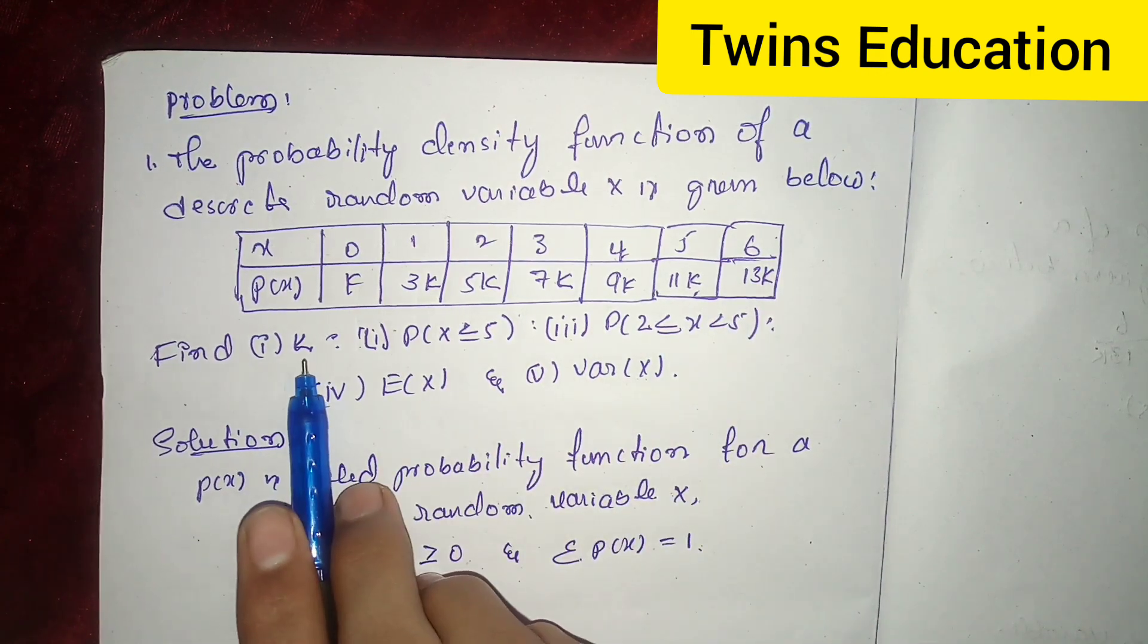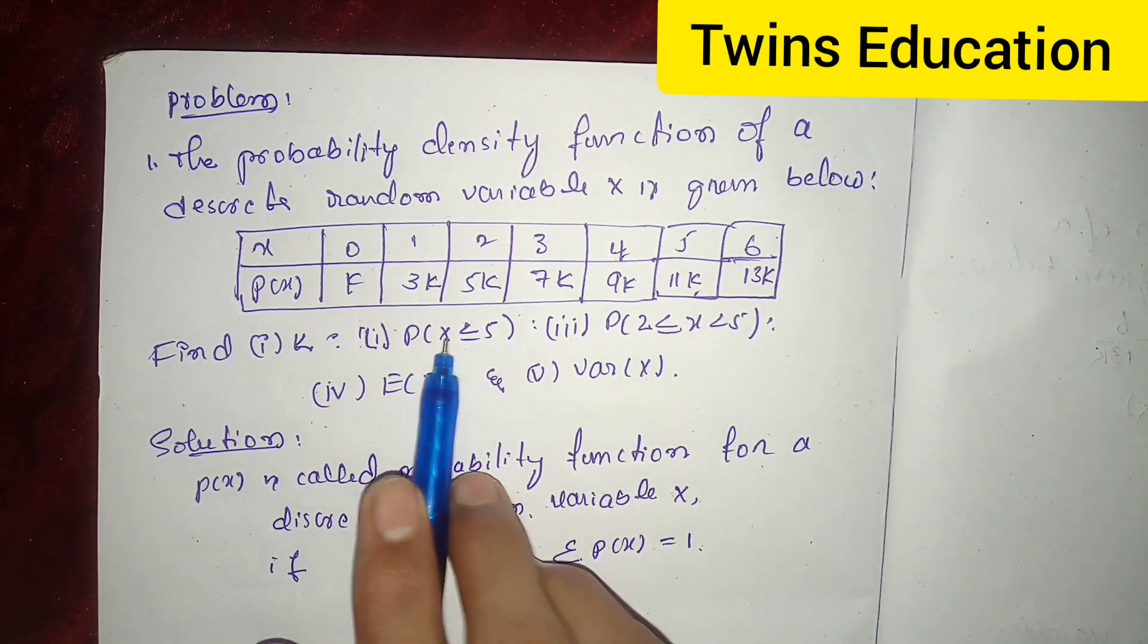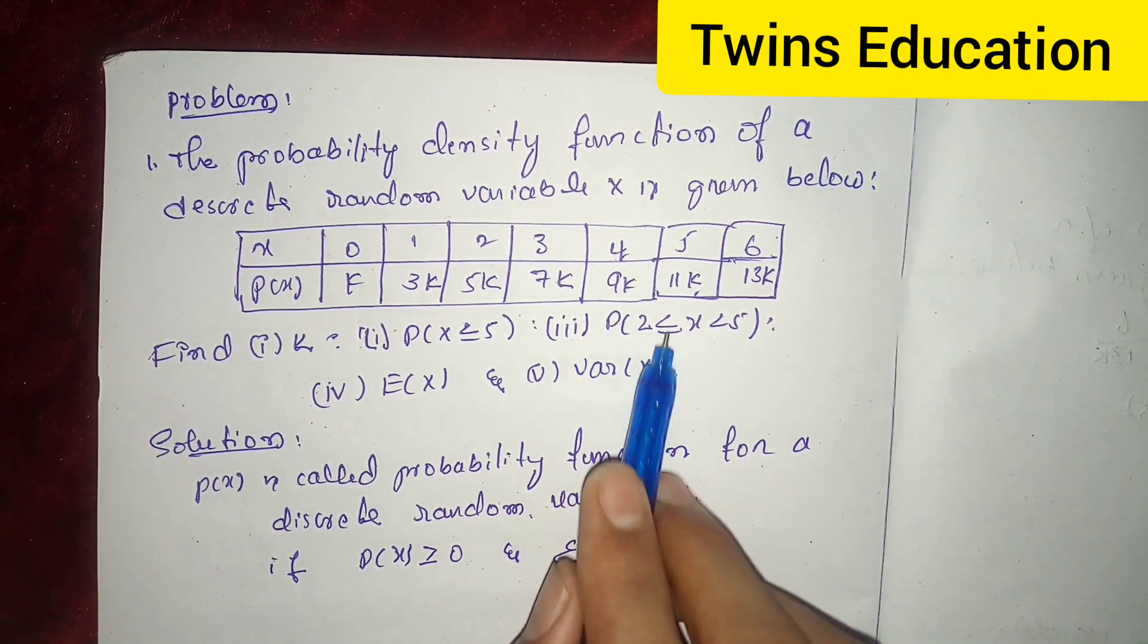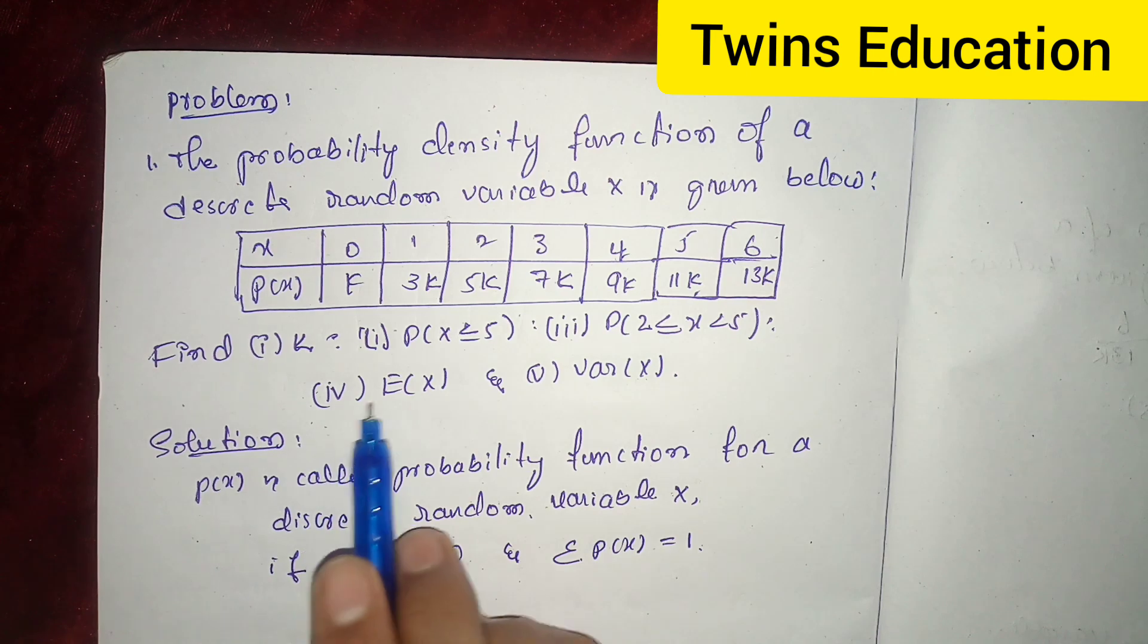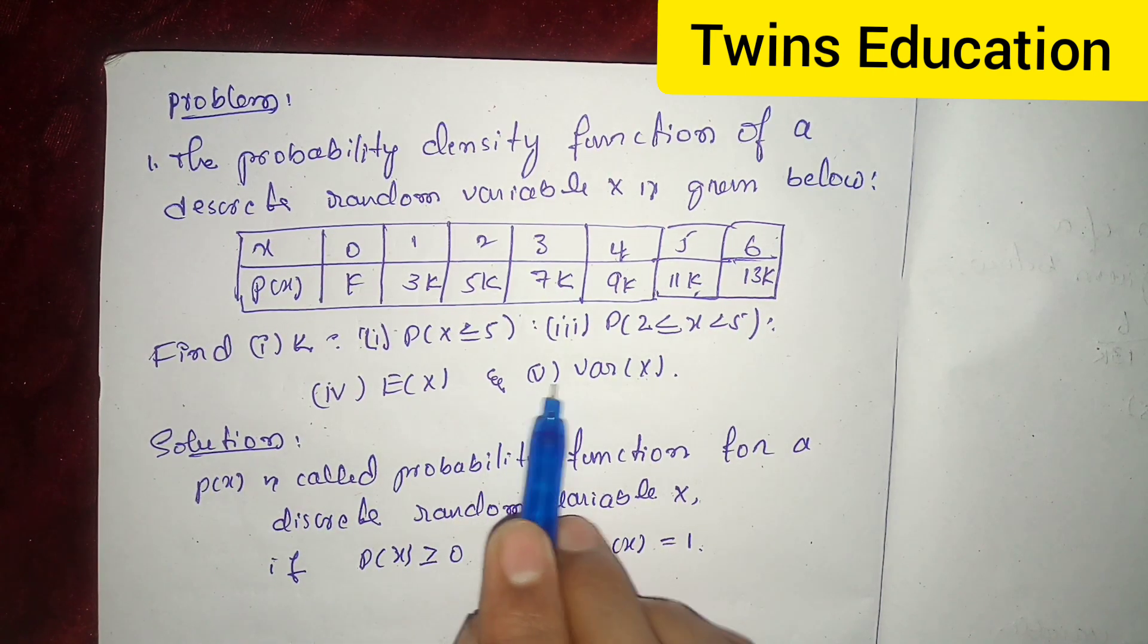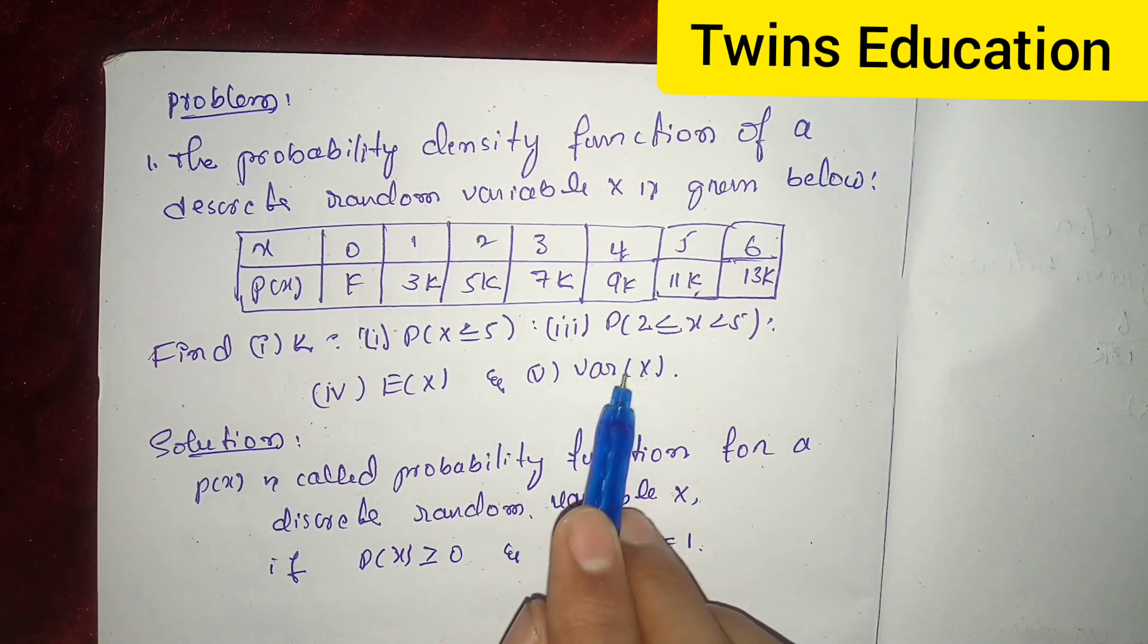Find first k, and then p of x is less than or equal to 5, and third condition is p of 2 is less than or equal to x less than 5, and fourth one is mean E of x, and fifth one is variance of x.